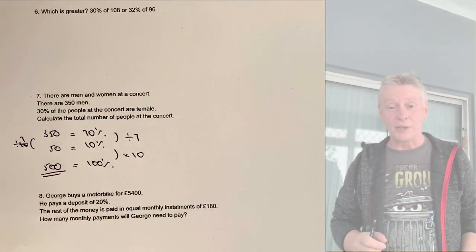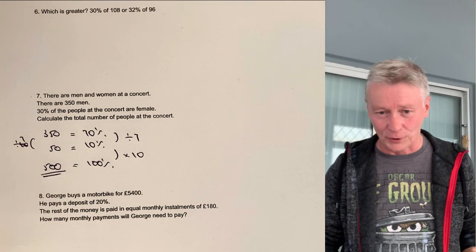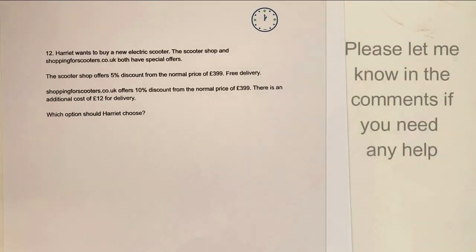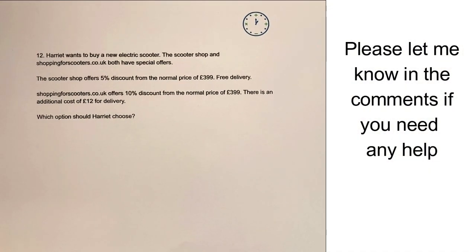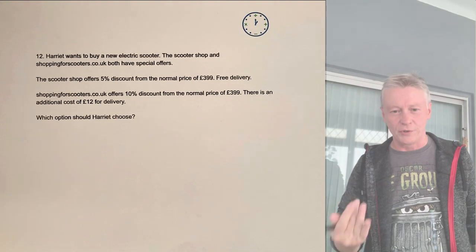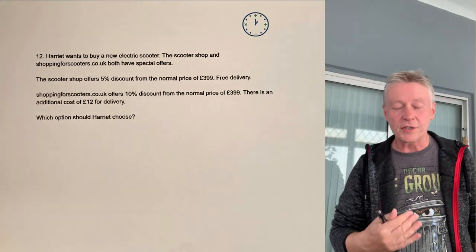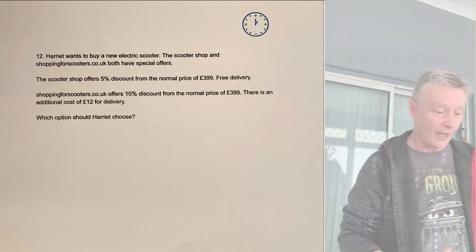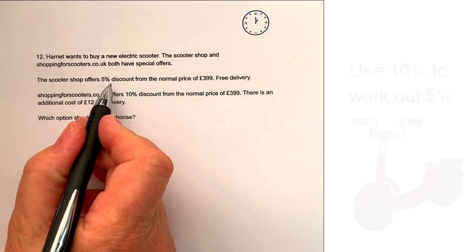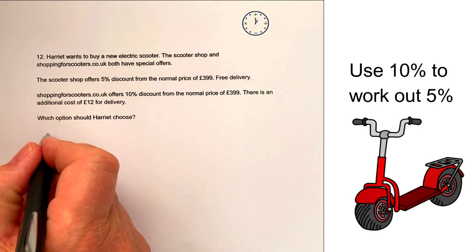Let's look at the final question in this particular worksheet — the hardest sort of percentage-type question you're going to need to come across. We've got a comparison of two different shops: the first one is the Scooter Shop, and the second one is Shopping for Scooters. The first deal is a 5% discount on £399.